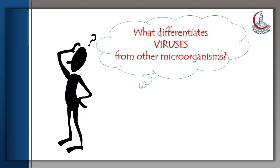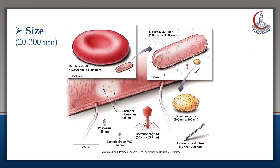Viruses are small infectious agents which are different from other microorganisms. As clear from this figure, this is a red blood cell beside a bacteria. When magnifying this bacteria, you can recognize the size of the virus in comparison. These viruses are measured in nanometers, that's why they are seen by the electron microscope, not the ordinary light microscope. Unlike the bacteria, which is measured in micrometers and can be examined by the light microscope.